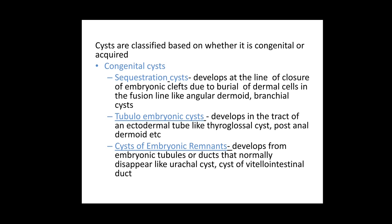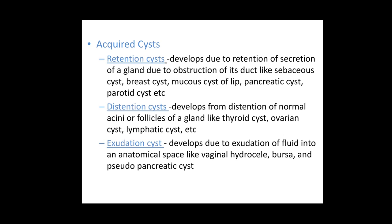Acquired cysts include retention cysts — a type of cyst that develops due to retention of secretions of a gland due to obstruction of its duct. A classic example is a sebaceous cyst, where the duct opening near the hair follicle becomes blocked, resulting in retention of secretions within the sebaceous gland. Other examples include breast cyst, mucous cyst of the lip, pancreatic cyst, and parotid cyst — all structures with ducts that, when blocked, result in cystic dilatation.